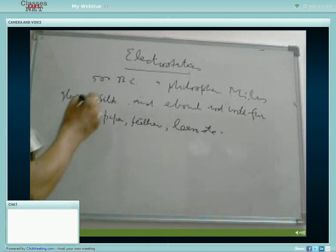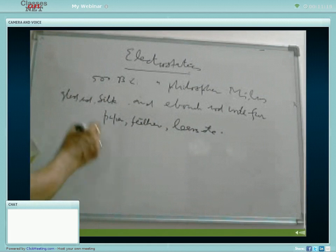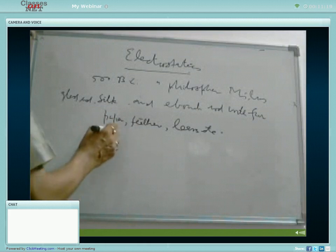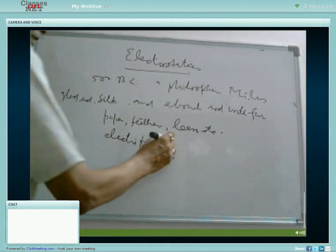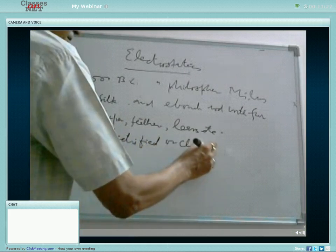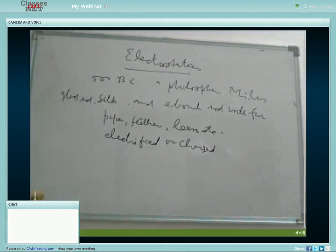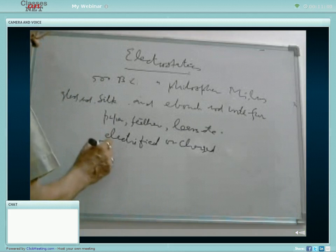We found that glass rod and ebonite rod, they attain the property of attracting small pieces of paper, that means they are electrified or charged. This branch of physics which deals with the study of charges and their motion is known as electrostatics or frictional electricity.